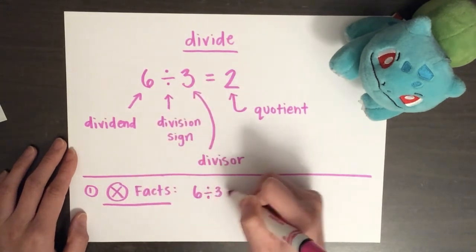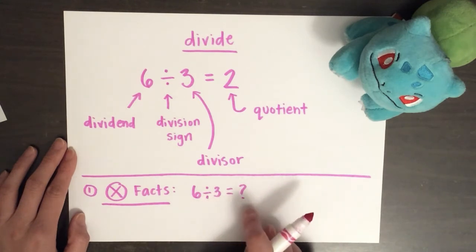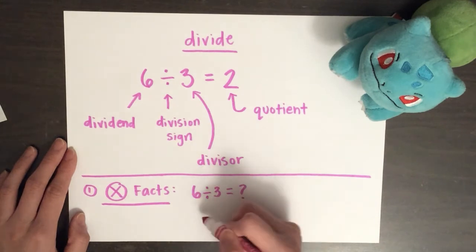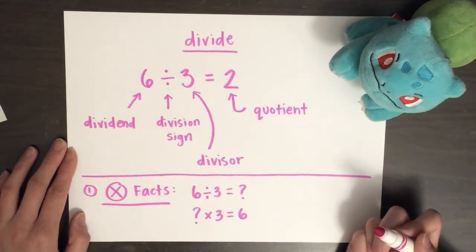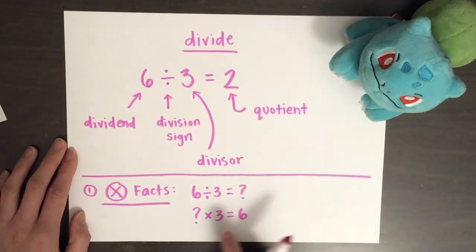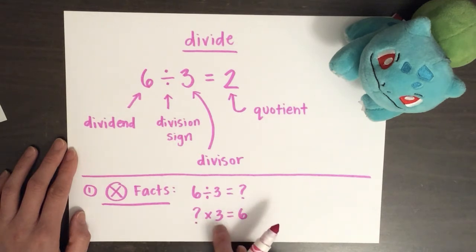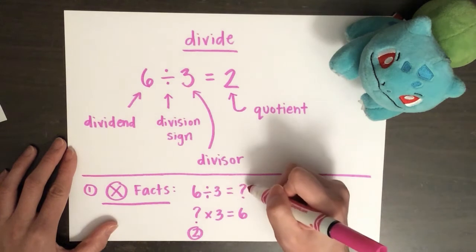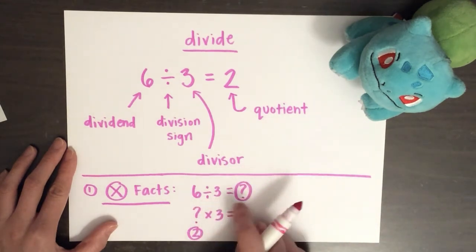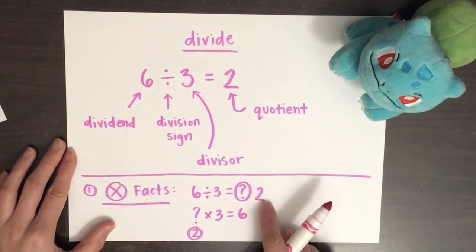Six divided by three equals something. Well, I'm not quite sure what six divided by three equals, so I'm going to ask myself something times three equals six. Because we've been practicing so much with multiplication facts, I know what that question is. I know it's not one. One times three is three. That's not six. Let's try two. Two times three is six. So the question mark must be two. Meaning that six divided by three equals two.